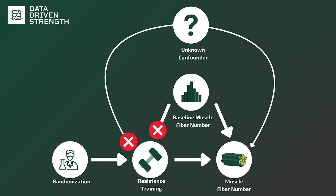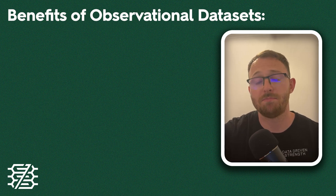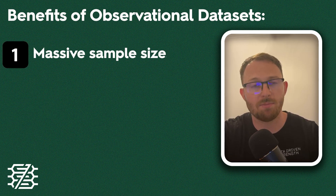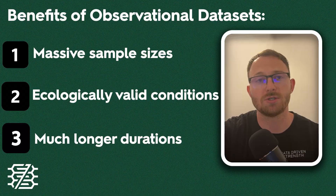The benefits of randomization can extend even further. They help to control against unknown confounding variables, which can bias observational studies even when a well thought out causal model is put forward. While there are limitations to cross-sectional studies and other observational research, I do think they get some unnecessary hate. The reality is situations where randomized control trials aren't feasible are still worth studying — one example being the impact of smoking on health-related outcomes, where randomization would simply be unethical. Moreover, observational data sets often have massive sample sizes, ecologically valid conditions, and much longer study durations that actually look at the timelines we're interested in.